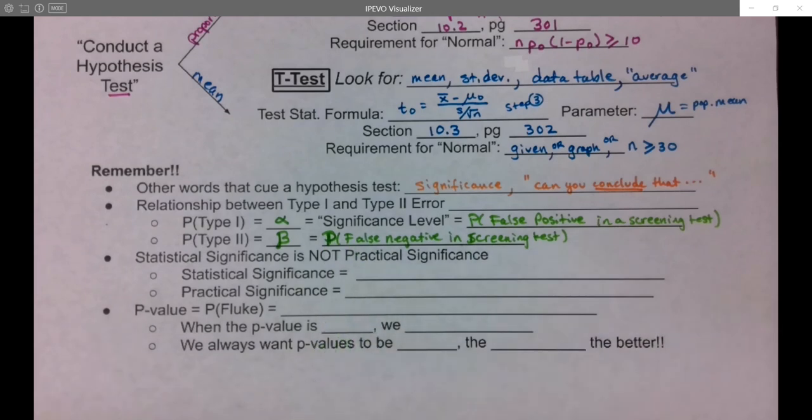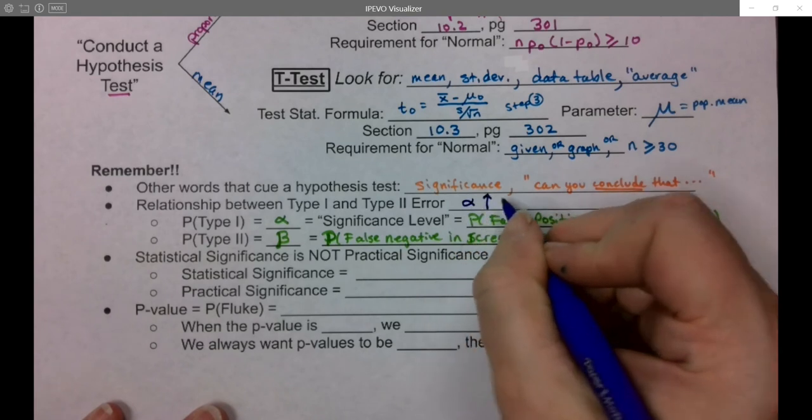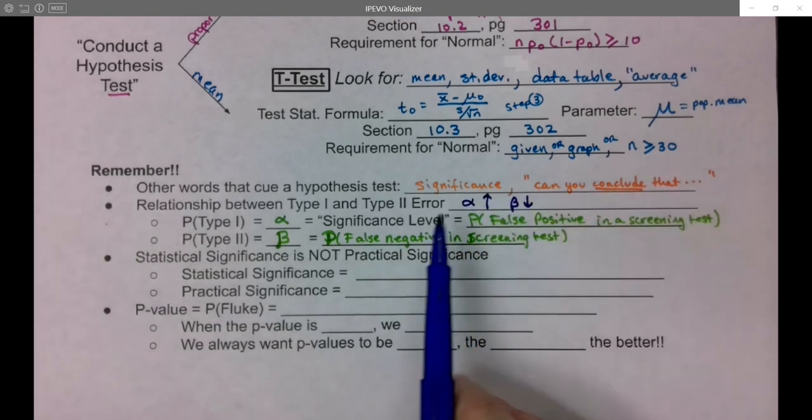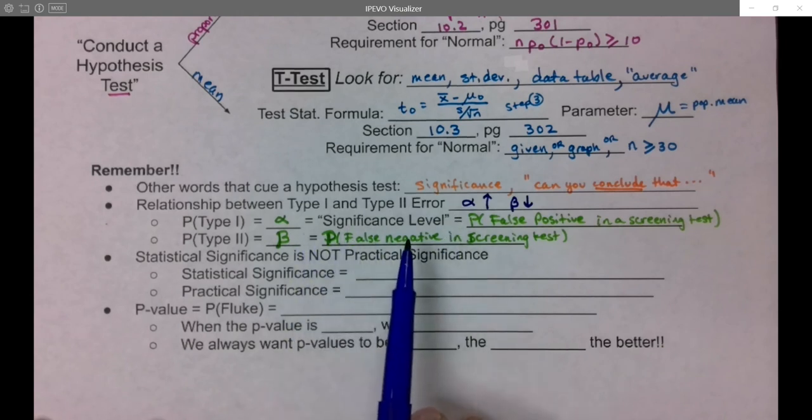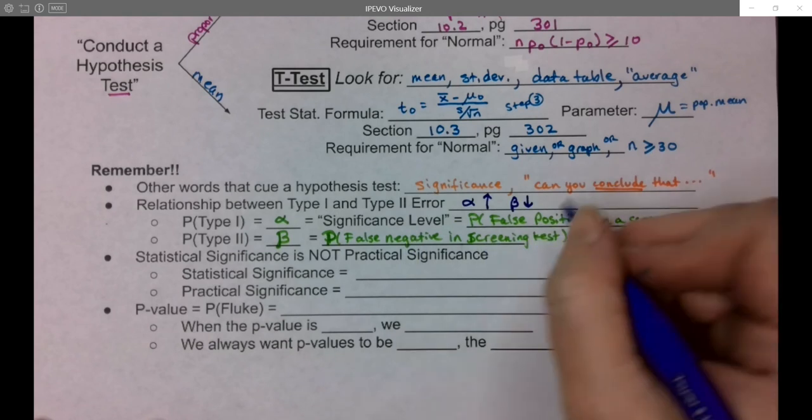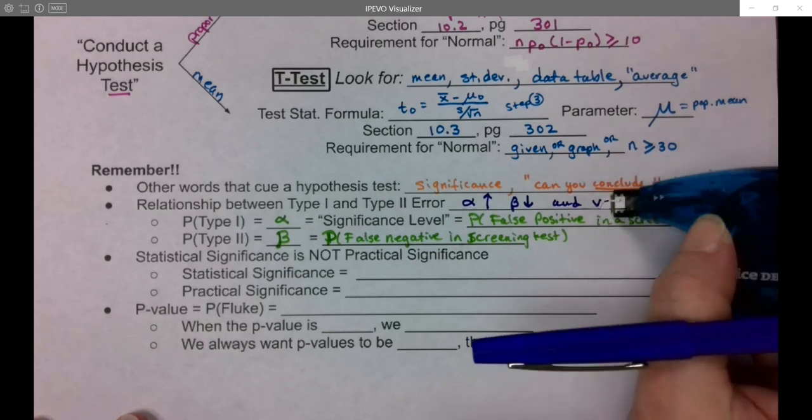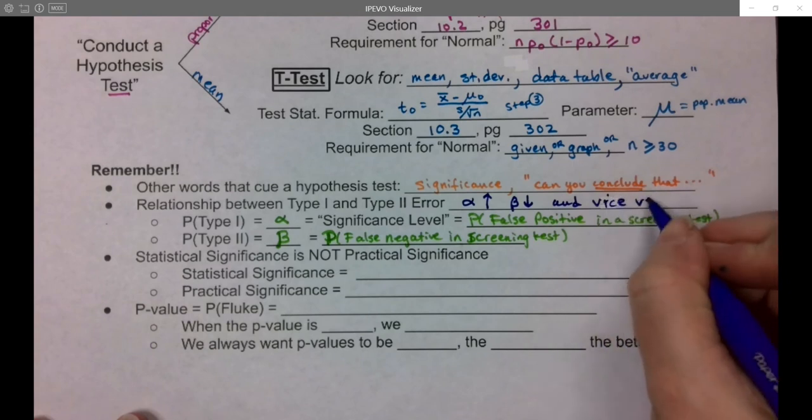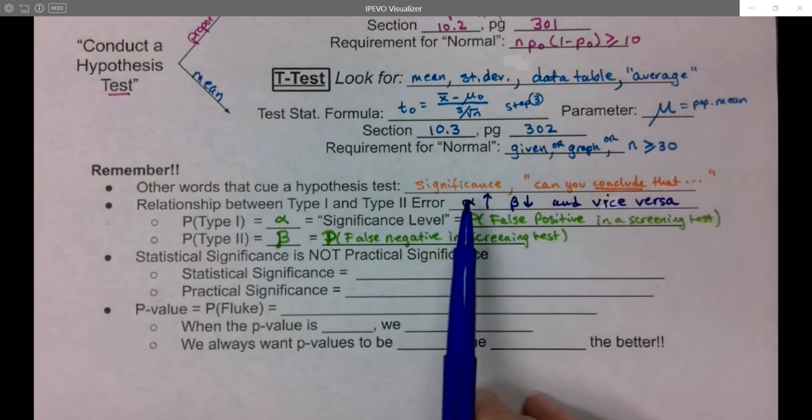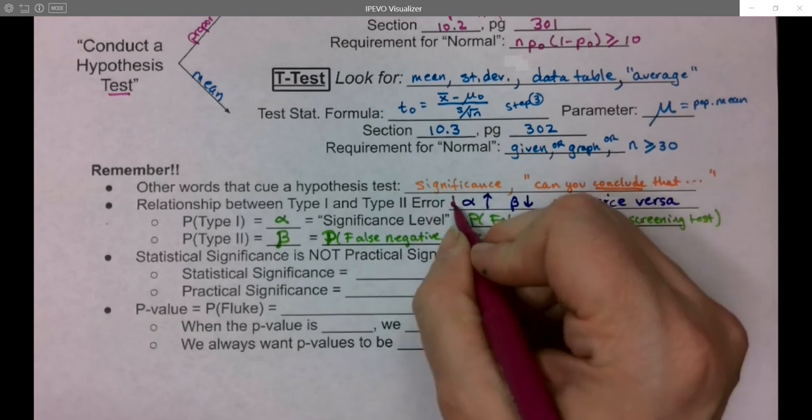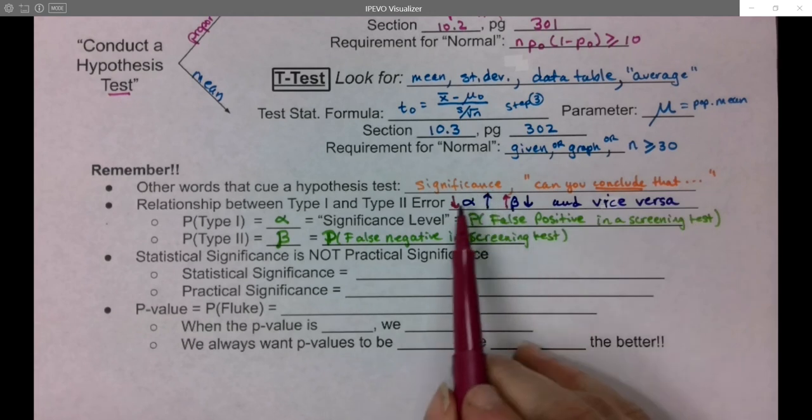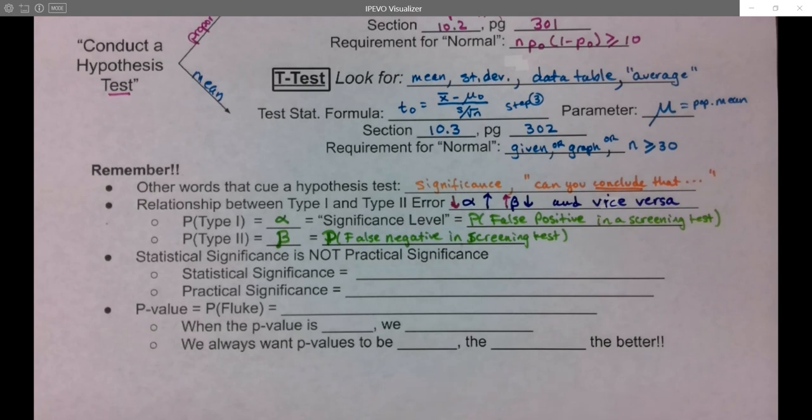There's a relationship between the two. If α goes up, then β would go down. If you're really worried about false positives, then you're going to end up making more false negatives, and vice versa. They're on a teeter-totter together. If α goes down, β would go up. If α goes up, β goes down. They're in an inverse or indirect relationship.